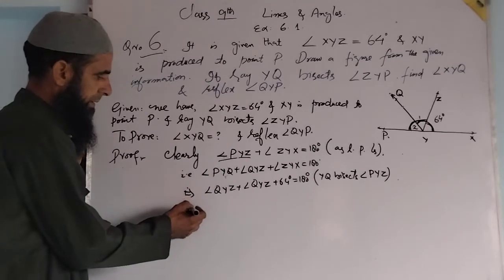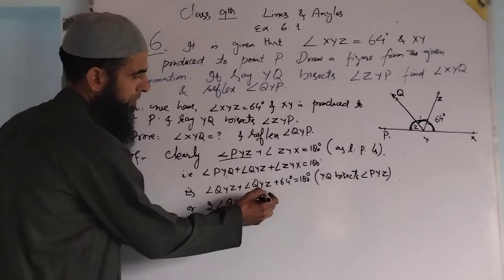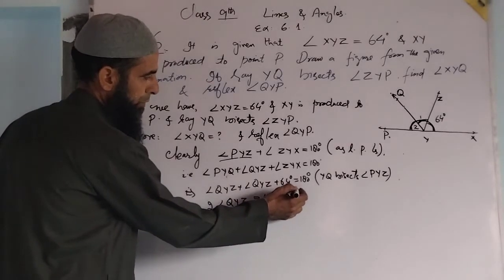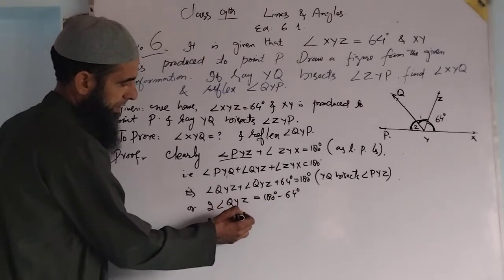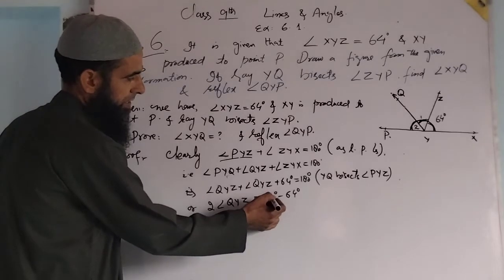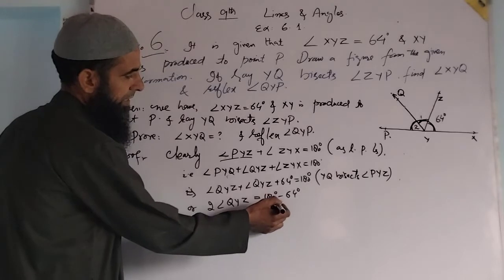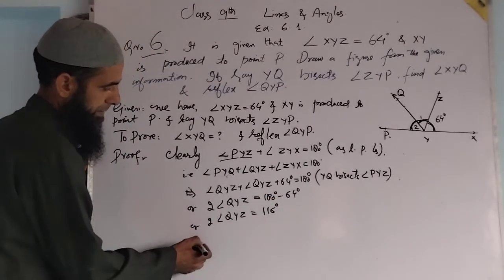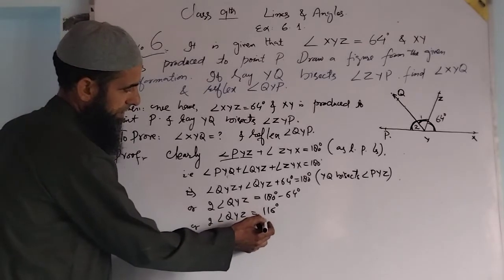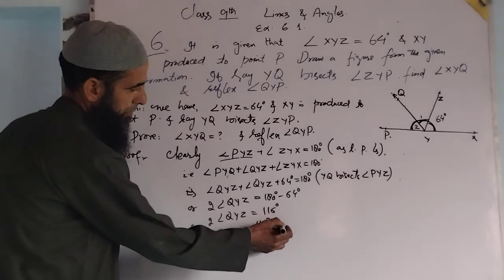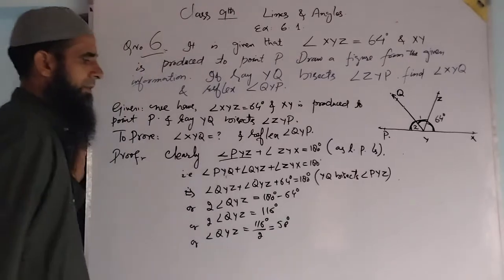So this gives us two times angle QYZ equals 180 minus 64, which equals 116 degrees. Therefore angle QYZ equals 116 divided by 2, which equals 58 degrees. So we have angle QYZ equal to 58 degrees. Since angle PYQ equals angle QYZ, therefore angle PYQ is also 58 degrees.